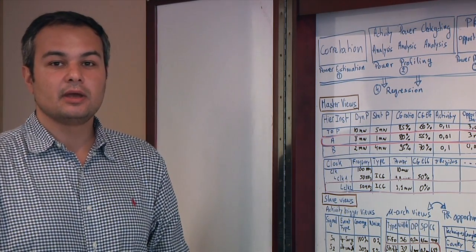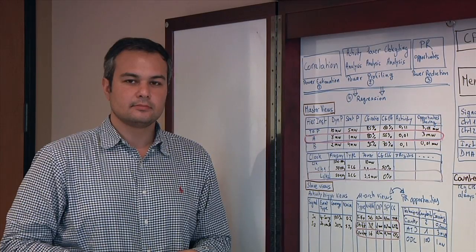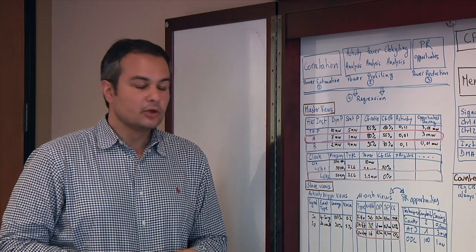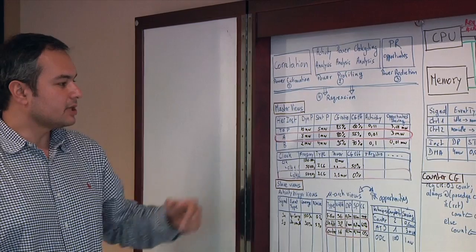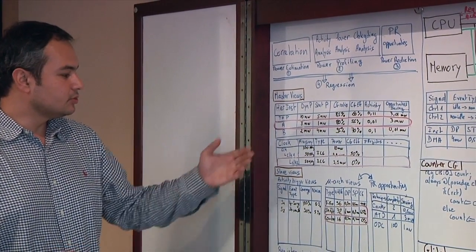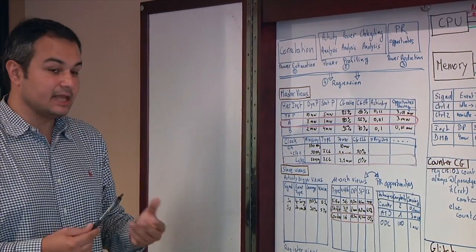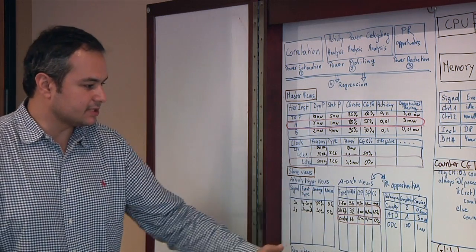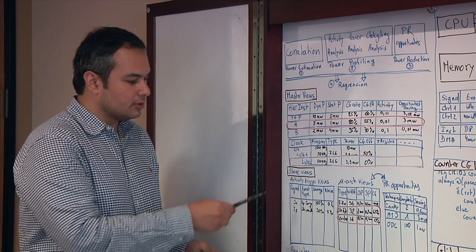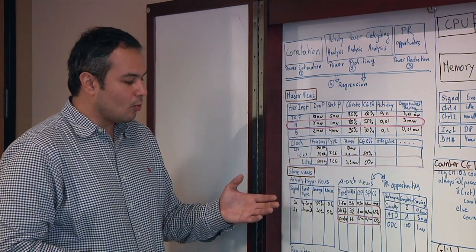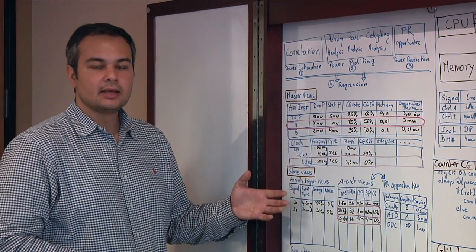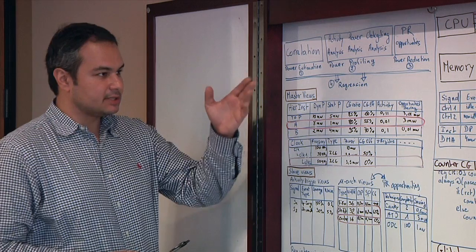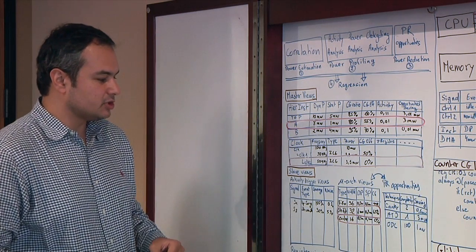Now that you've identified some of the issues, what do you have to do to really dig into this? After identifying the block you want to spend time on, you go and dive into what we call slave views to do fine-grained analysis. There are different views of the design. The first one is what I call the activity triggers view — basically, what are the signals in the design triggering activity on the block you're analyzing. This is important information, as we'll see later, in how we can use it to do power optimization.